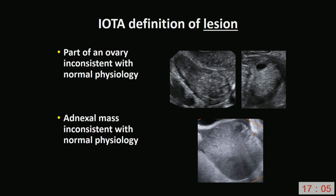The IOTA definition of a lesion is part of an ovary inconsistent with normal physiology. This part of this ovary here is not consistent with normal physiology — this is a Sertoli-Leydig cell tumour. And this part of this ovary is not consistent with normal physiology — it's a case of struma ovarii.